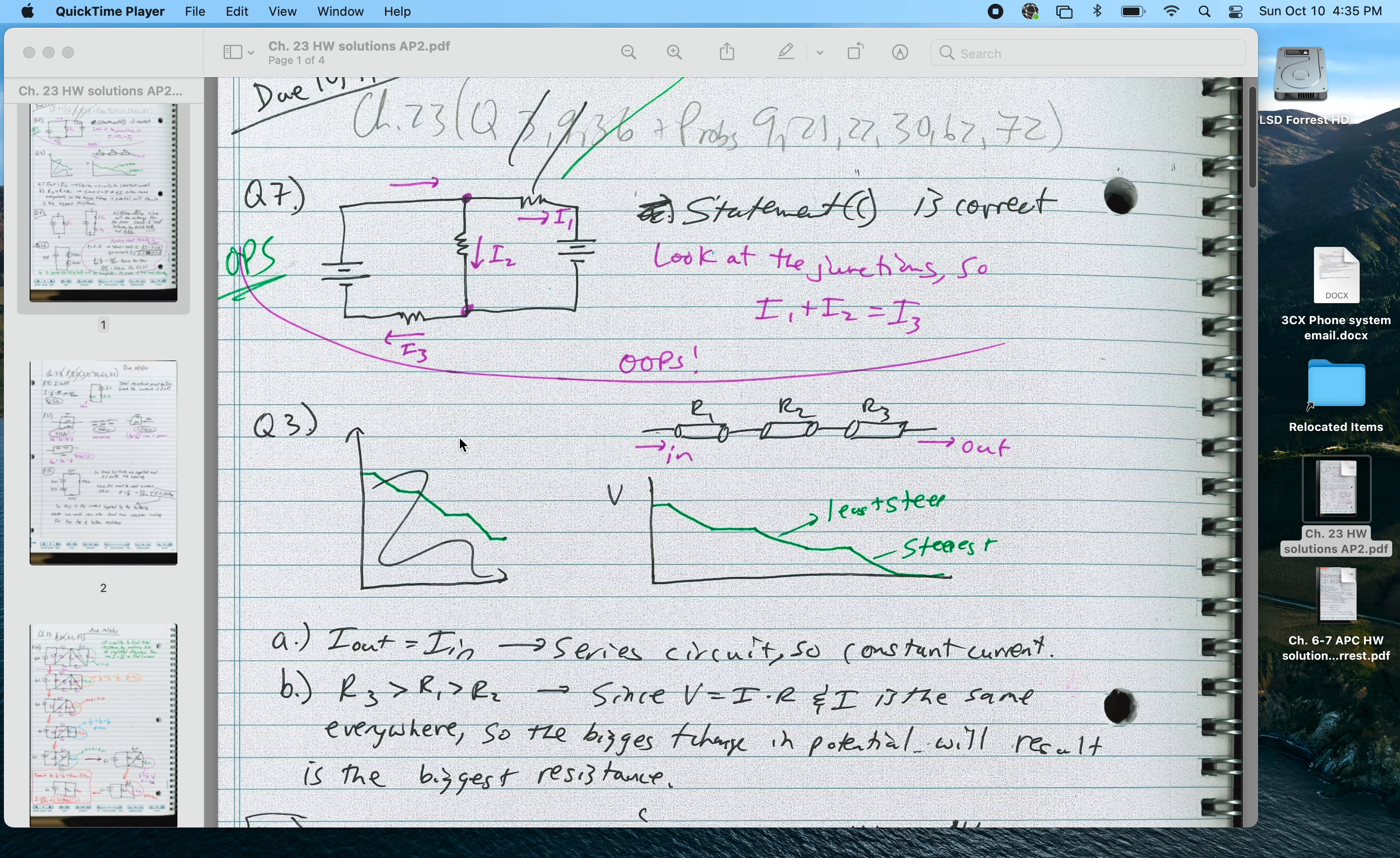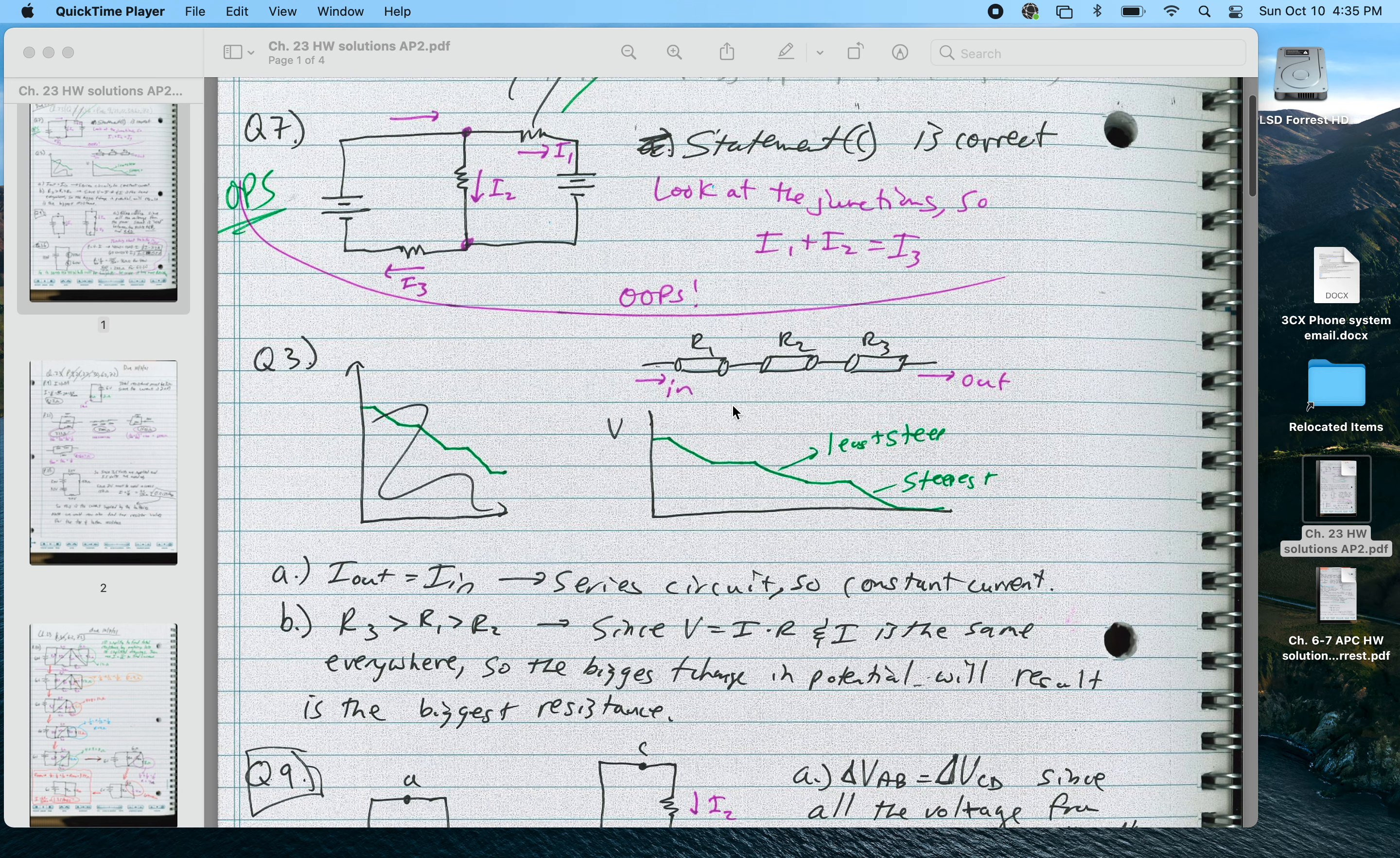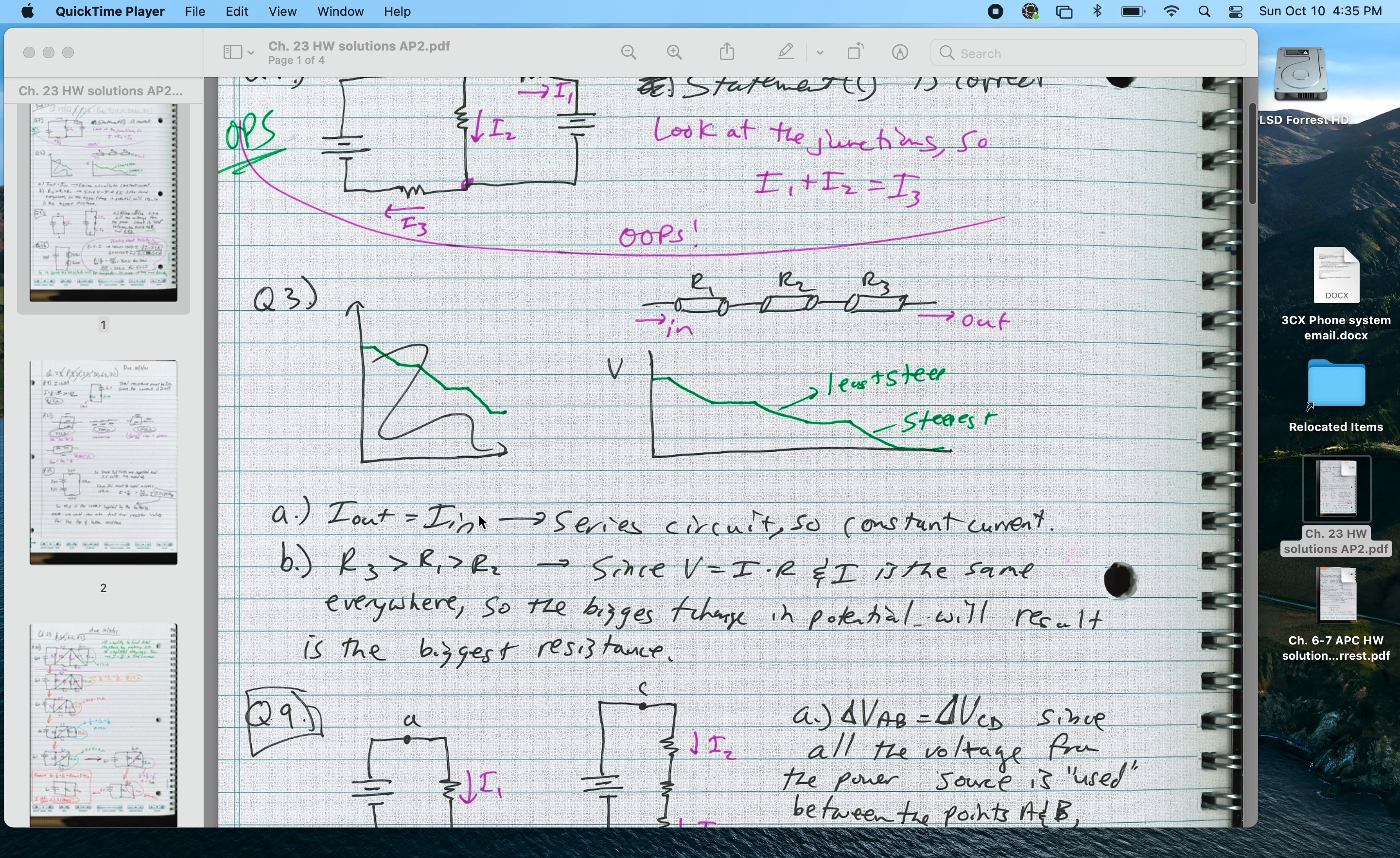For question 3, we had three resistors here in series, and this graph for voltage, this was the steepest region, this was the least steep. The current had to be the same in all of them because this is a series circuit. The current's the same everywhere within a given series circuit. In this case, if this is the steepest, it's going to have the greatest change in voltage, and therefore that would have the greatest resistance since V equals I times R.